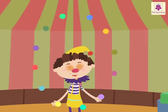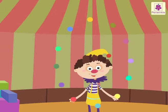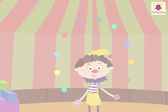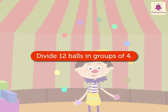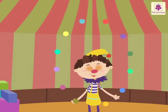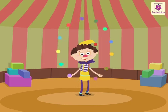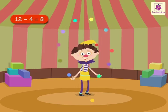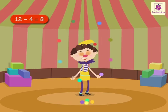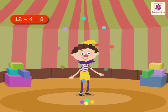Let's take another example. Look at Jimbo — he is juggling twelve balls. Jimbo wants to divide these twelve balls in groups of four. Since Jimbo has to divide in groups of four, he subtracts four balls from twelve. Now he is left with eight balls.